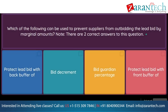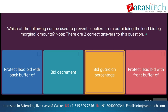Question: Which of the following can be used to prevent suppliers from outbidding the lead bid by marginal amounts? Note, there are 2 correct answers to this question. Option 1: protect lead bid with back buffer. Option 2: bid decrement. Option 3: bid guardian percentage. Option 4: protect lead bid with front buffer.